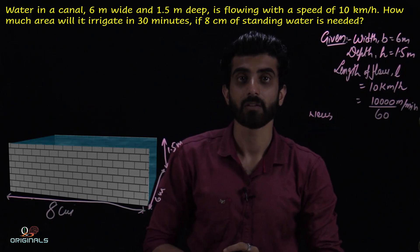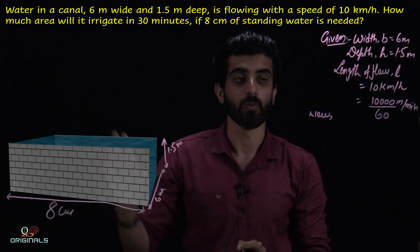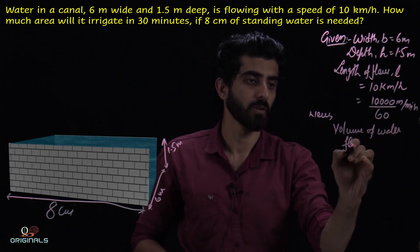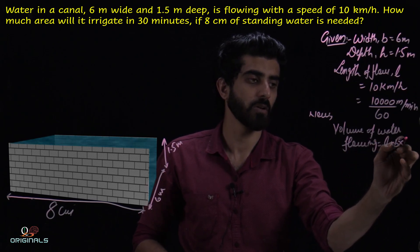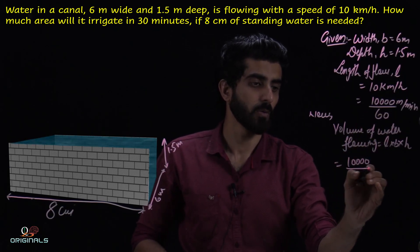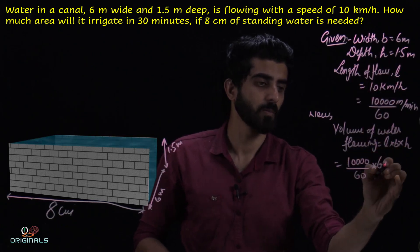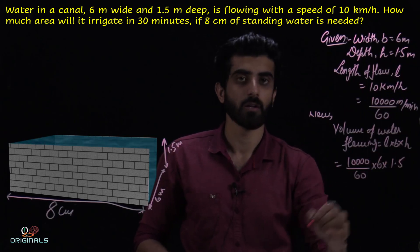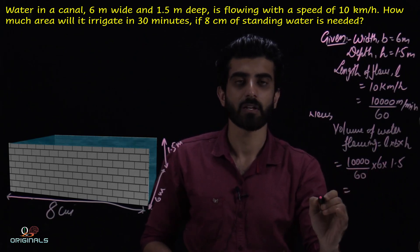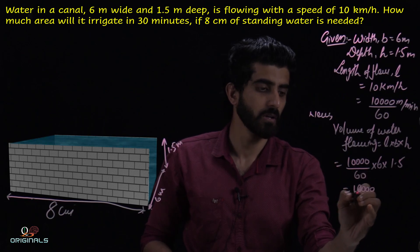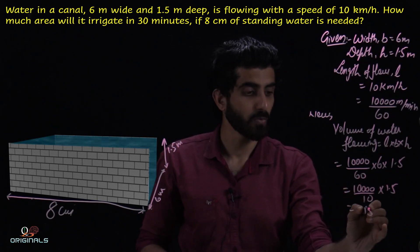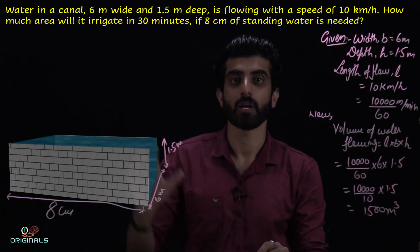First of all, we calculate the volume of water flowing through the canal. Volume equals length into breadth into height. Calculating this: length is 10,000 divided by 60, breadth is 6, height is 1.5 — so the volume of water flowing through the canal per minute is equal to 1500 cubic meters.